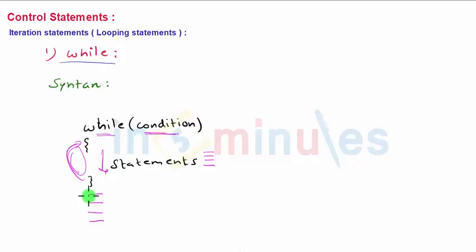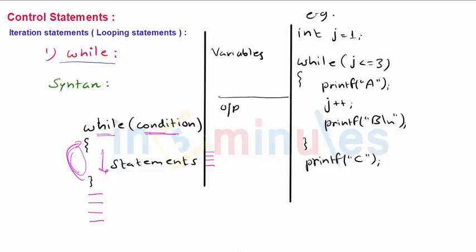Let's see an example of a while statement. Here we have a simple example. The while statement says while j less than or equal to 3 is true, repeat statements 1, 2, and 3. Let's see how it works. Initially j is set to 1 because of this statement.